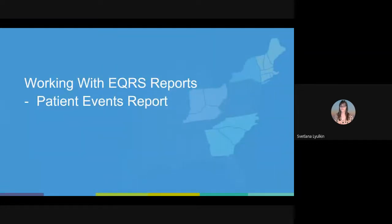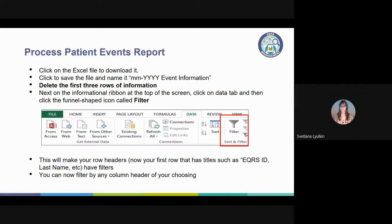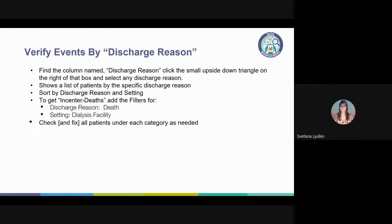Now let's review the patient events report, also in EQRS. You may already be familiar with this report from working on the 2744 Annual Facility Survey. It is located in the Reports tab and asks you to enter a start date and end date. Once completed, download the report and remove the first three rows of the Excel file so you can apply sorts and filters. Start by sorting patients by admit reason to make sure every patient is admitted correctly with the correct admit date, then sort by discharge reason to verify those dates and reasons are accurate as well. Make all corrections in the EQRS patient record, not in the Excel file.